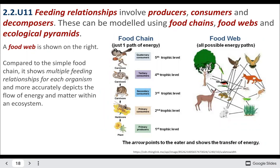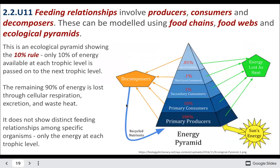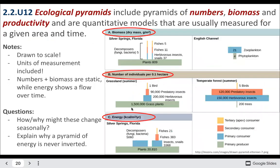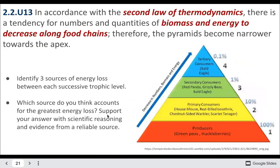A food web shows many different organisms at each level with lots of different connections. If it asks for a chain, you need just one path of energy. Ecological pyramids show the same relationships but visualize numbers, biomass, energy, or productivity — the change in biomass over time. The second law of thermodynamics is visible in pyramids of biomass, energy, and productivity, which all decrease as you go up the food chain. There are far fewer bald eagles than mice or warblers, because there isn't enough energy to support that many.